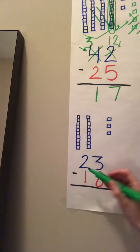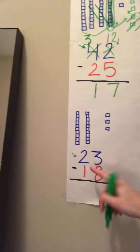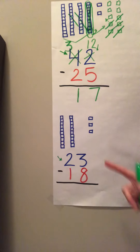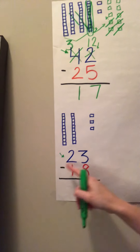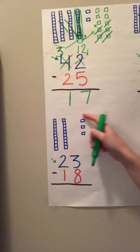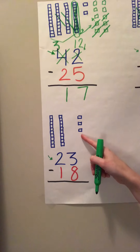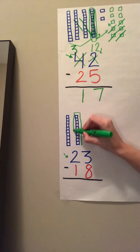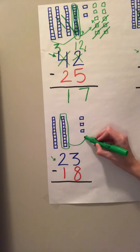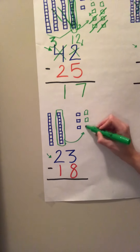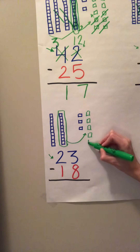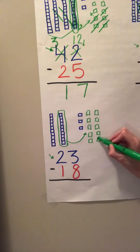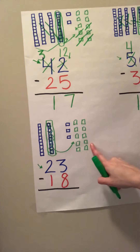Alright, let's do one more. So again, we're representing our number that we're starting with. We're starting with twenty-three, so I have my two tens and my three ones. But when we get started, I have three minus eight. Do I have enough here to take eight away? No, I only have three. So we need to borrow a group — we need to take this group of ten and move it over here with our ones.